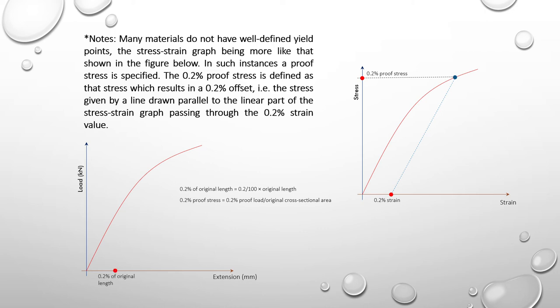To determine the proof load, take 0.2% of the original length, draw a straight line parallel to the curve, and where it intersects gives the proof load. This method applies only to materials which do not have a well-defined yield point.